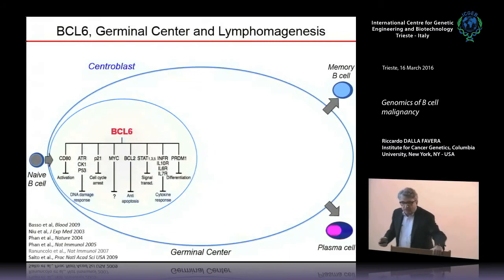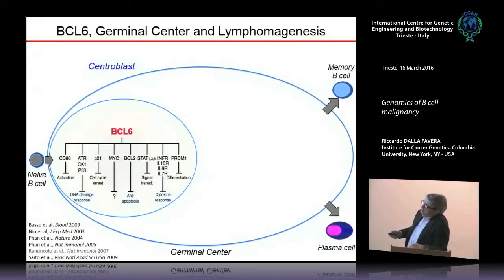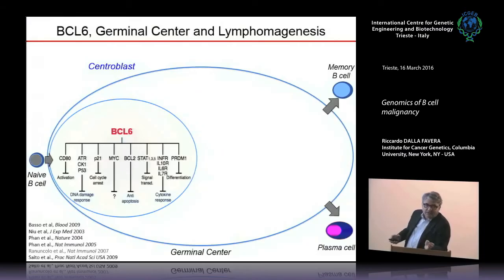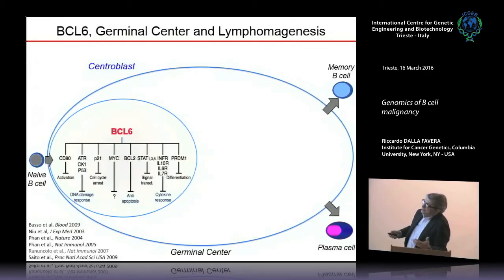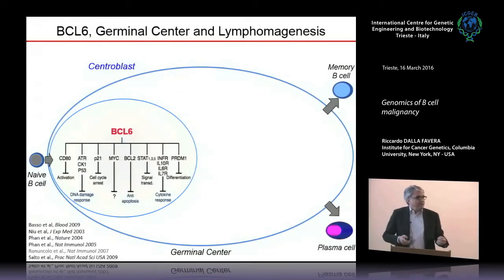Very important, and really the peculiarity of the germinal center, is BCL-6's repressive activity on genes involved in sensing and responding to DNA damage. For instance, it represses P53 in this phase. We interpret this as the need to tolerate DNA breaks because they are physiologic — necessary for somatic hypermutation and class switch recombination. BCL-6 also represses cell cycle arrest genes like P21. It represses the MYC gene — one of the prototype proliferation markers — though paradoxically, in these truly hyperproliferative cells, BCL-6 is repressing MYC for reasons we don't fully understand.